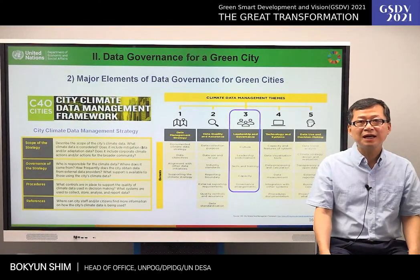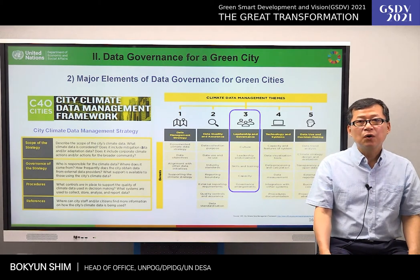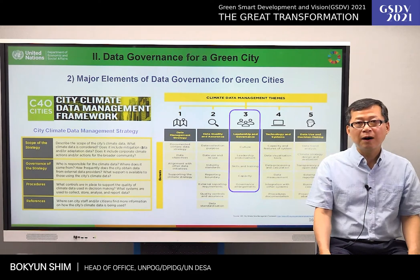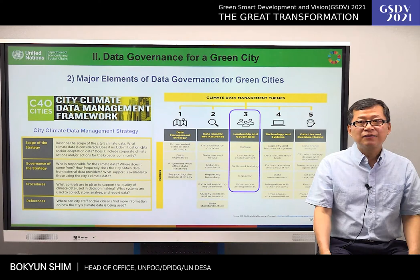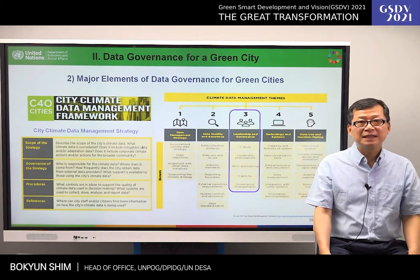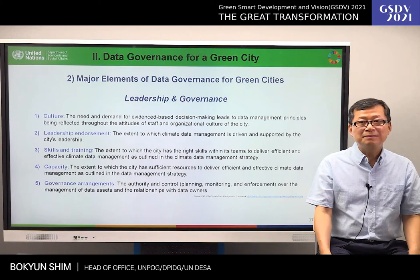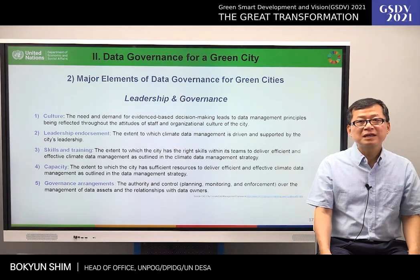I would like to introduce the City Climate Data Management Framework and Maturity Assessment Tool developed by C40 as a reference on data governance for green cities. It is composed of five major themes: one is data management strategy, two is data quality and assurance, three is leadership and governance, four is technology and systems, and five is data use and decision-making. Among the five major themes, I would like to particularly focus on the third theme — leadership and governance — whose five elements are culture, leadership and endorsement, skills and training, capacity, and governance arrangements.